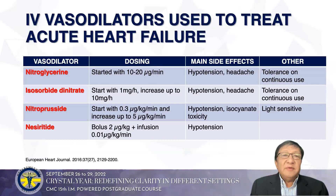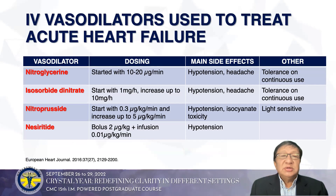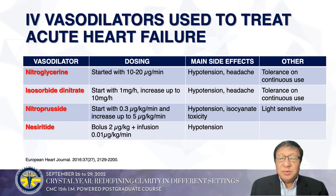IV vasodilators used to treat acute heart failure include nitroglycerin drip and isosorbide dinitrate drip. We need to know the dosing as shown. The main side effects are hypotension and headache, and in the case of nitroprusside, cyanide toxicity. These patients should be monitored very closely for hypotension.